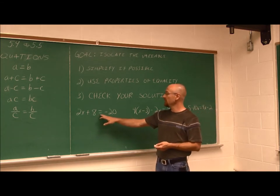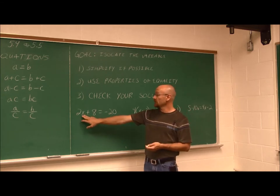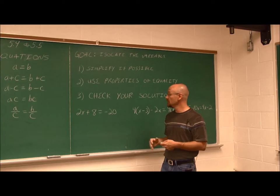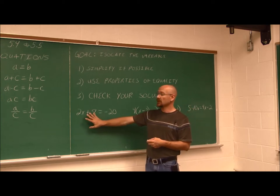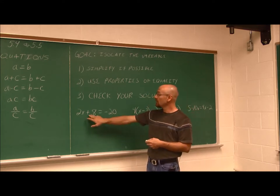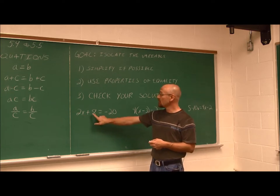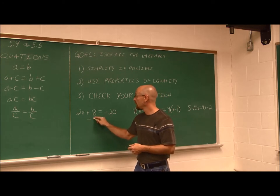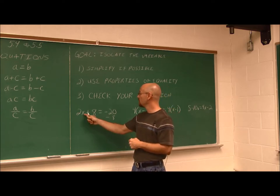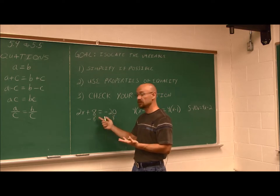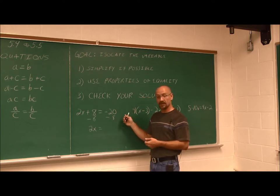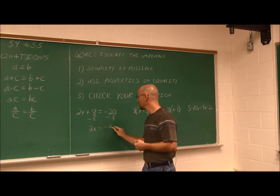The first example: 2x + 8 = -20. I identify x as my variable. There's nothing to simplify — no parentheses to eliminate. So I undo the addition by subtracting 8 from both sides, using the property of equality. Then 2x + 8 - 8 gives me 2x, and -20 - 8 gives me -28. Now I have 2x = -28.